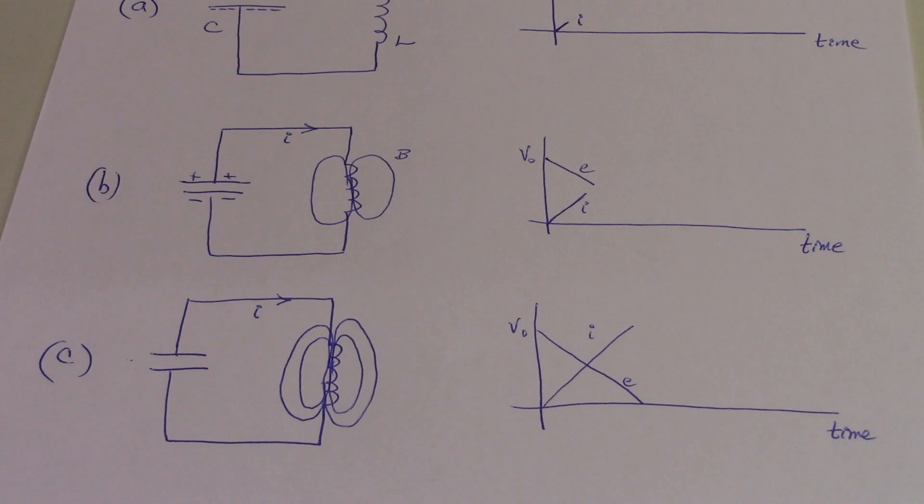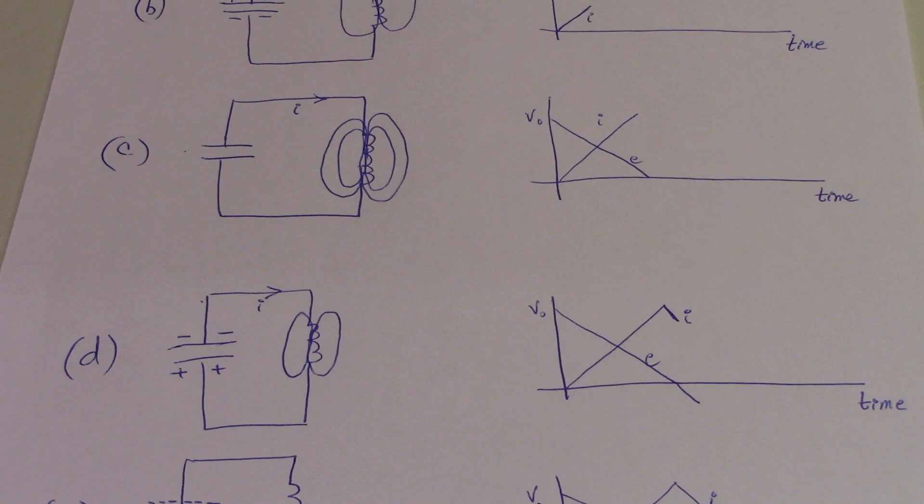In drawing C, we see that when the charge is depleted from the capacitor, current continues to flow through the circuit. At this time, the magnetic field is at its maximum. This results in the situation depicted in drawing D, where a back emf is formed in the inductor due to Lenz's law, and a current flows in a way to resist the decrease in current due to the depleted capacitor.